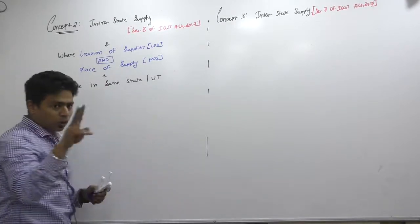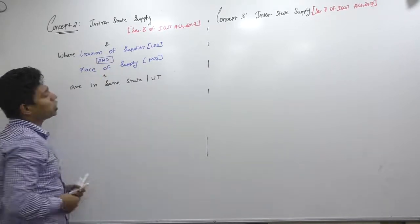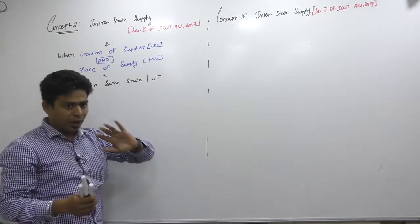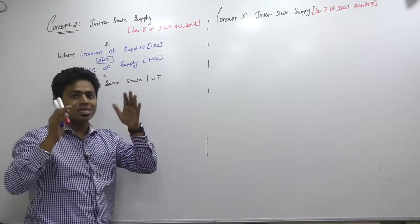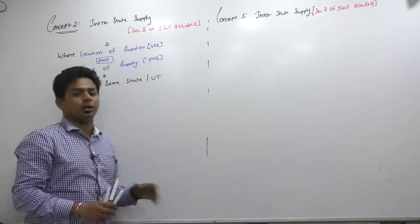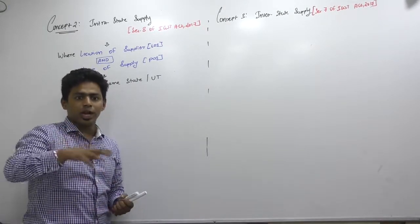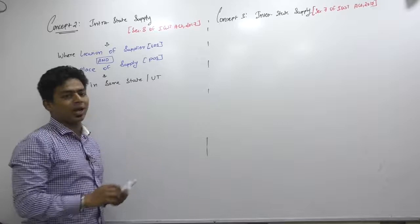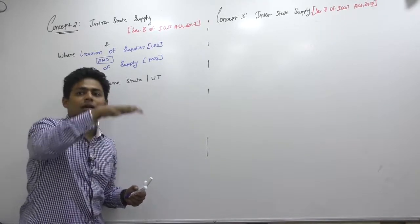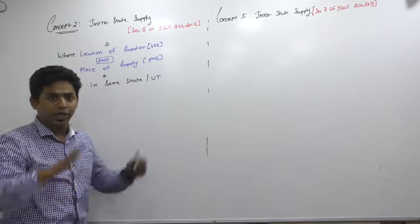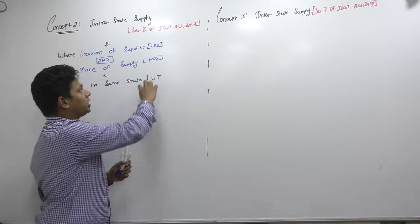What is intrastate? There are two conditions. You can see two conditions on my board: location of supplier and place of supply should be in same state or same UT—same state or same union territory. Then only it is known as intrastate supply.